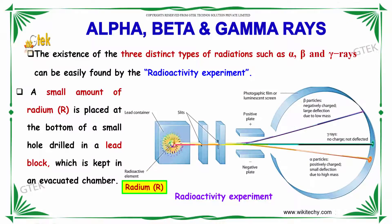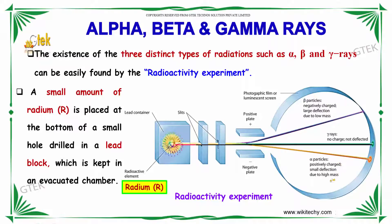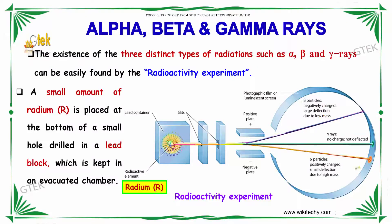You have your radioactive element in a lead container with two slits, and there are positive and negative plates. If there is no deflection, that's gamma rays. If it is positively charged with small deflection due to high mass, that's your alpha particle. The beta particle is negatively charged with large deflection due to low mass, detected on a photographic film or luminescent screen.